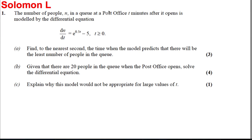Okay, here's another typical differential equation question. It says the number of people n in the queue of a post office t minutes after it opens is modeled by the differential equation dn/dt equals e to the 0.5t minus 5, where t is greater than or equal to 0. It says find to the nearest second the time when the model predicts that there will be the least number of people in the queue.